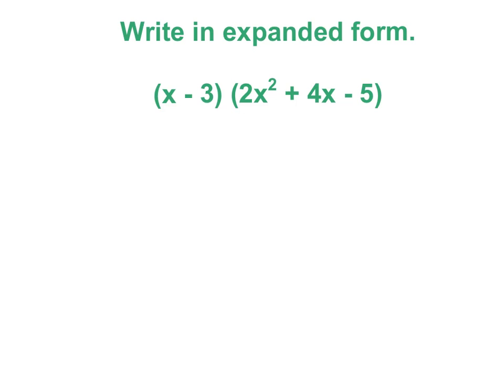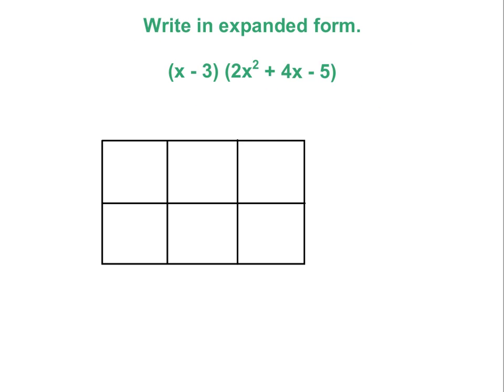Here we have two expressions that we are supposed to write in expanded form. This time we have one binomial, because it has two terms, and then we have one that has three. We are going to use the box method to expand this. The box method basically is used the same way, except this time we just need to draw a bigger box.